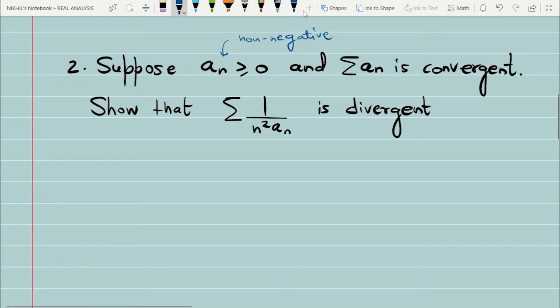They can be zero at max or always positive for every n coming from the set of natural numbers. And correspondingly, you are given that this series converges - summation An is a convergent series. Then you have to prove that this series, summation of 1/(An²), is divergent, that is, it does not converge.